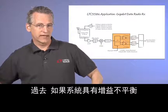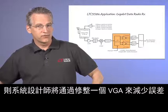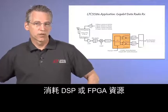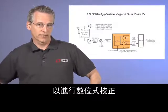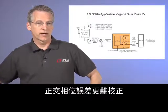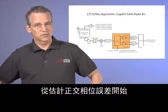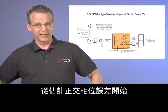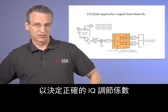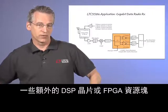In the past, if your system had a gain imbalance, the system designer would reduce the error by trimming a VGA, scale one of the system ADC outputs, expend DSP resources or FPGA resources to correct digitally, or simply accept the error as is. Quadrature phase error is more difficult to correct, because the system designer must implement corrections to the ADC outputs that are more complex, beginning with an estimation of the quadrature phase error, and then use a sine-cosine lookup table to determine the proper IQ scaling coefficients. It could be done, but it's going to consume some extra DSP slices or FPGA resource blocks.